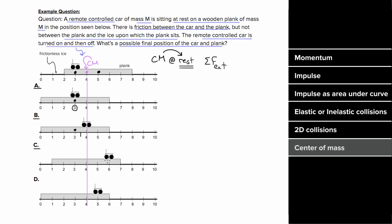Option C has the car at six and the center of the plank at four. This would put the center of mass of the system at five. That can't be right — we need our center of mass at four. Option D has the car at five and the center of the plank at three. That puts the center of mass at location four, just like it was before. So D is a possible solution.